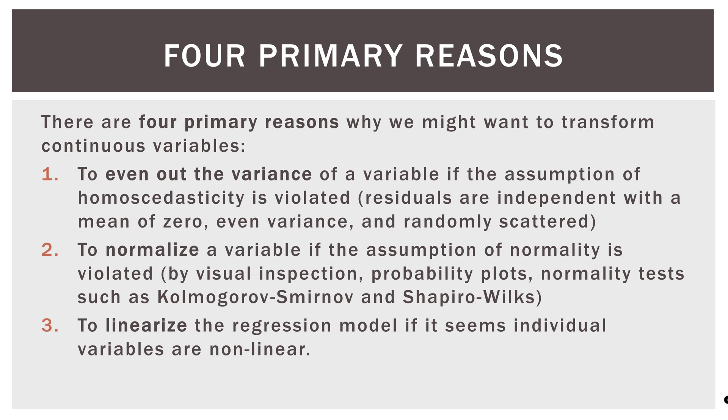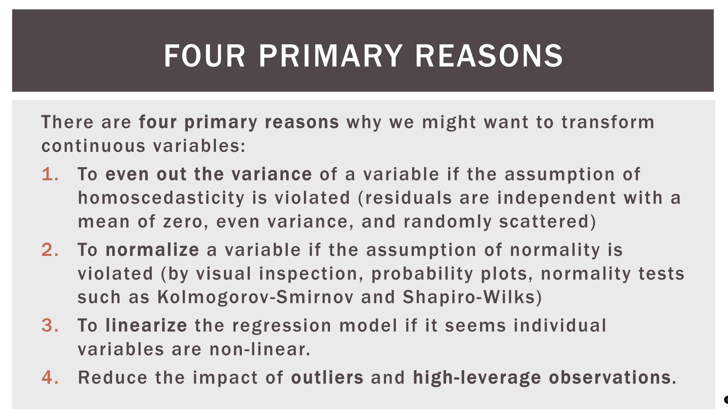Three: to linearize the regression model if individual variables appear non-linear. And four: to reduce the impact of outliers and high leverage observations. Outliers are observations drastically far from the mean. A high leverage data point is one that, because it's so far out of the norm, actually changes the orientation of the regression line — pulling it up, down, or sideways — distorting it. To recap, the four reasons are: even out variance, normalize a variable, linearize the regression model, or reduce the impact of outliers and high leverage observations.